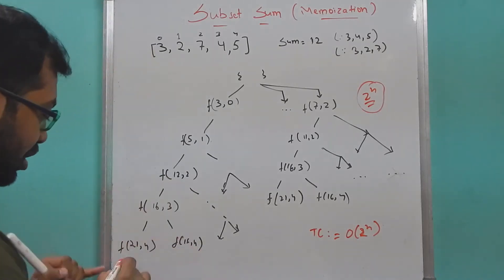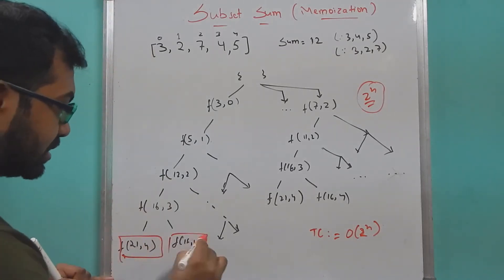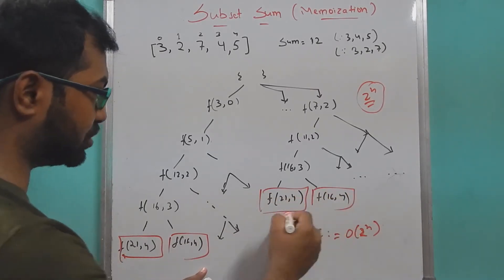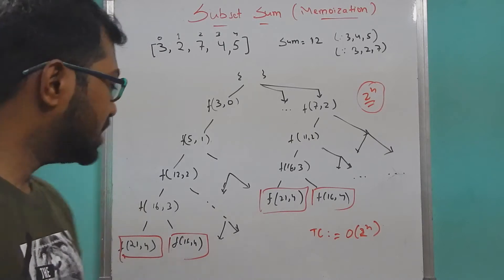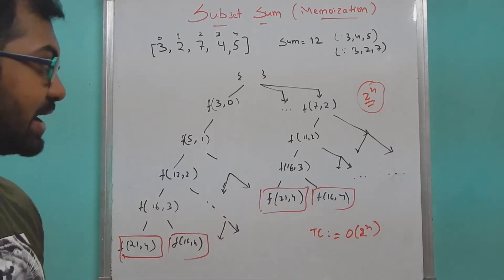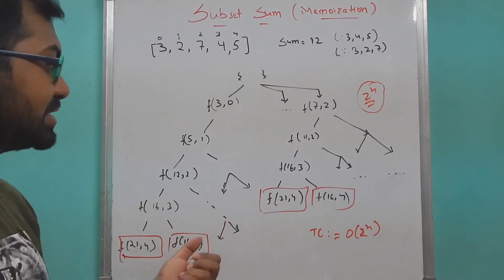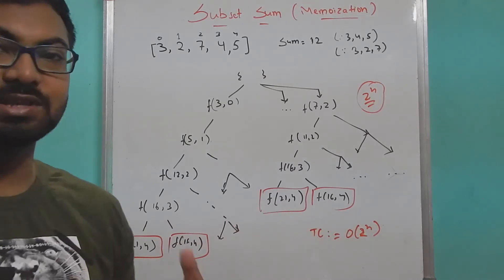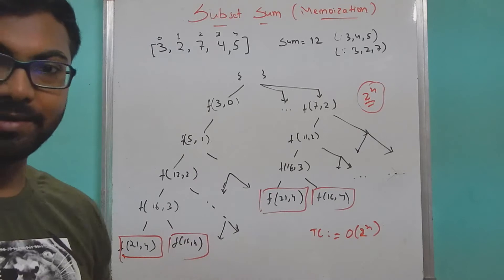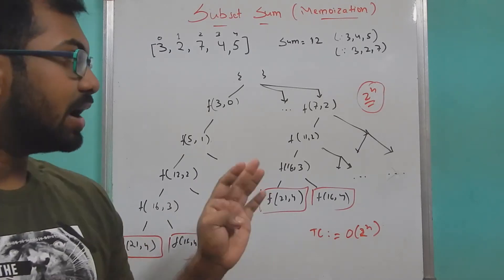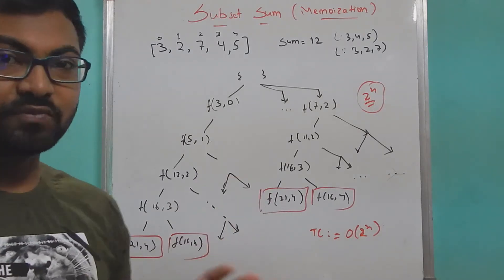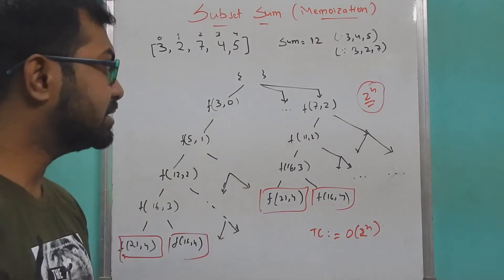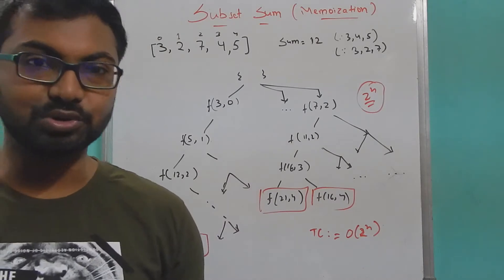We saw there are a lot of overlapping happening, like 16-4 here and 20-4. If this is the case and we have to optimize it, we can simply store these values in a data structure. That was the logic behind memoization. If you're not clear, just watch the previous video about the backtracking approach and things will be pretty clear.